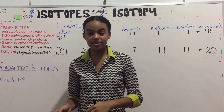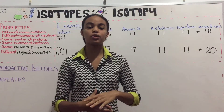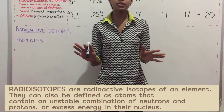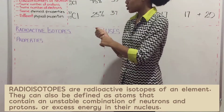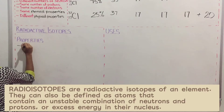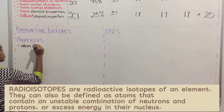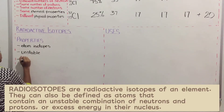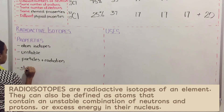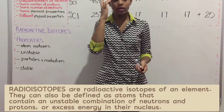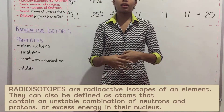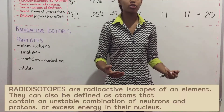Now we're going to look at radioactive isotopes, or radioisotopes, and give some uses of them. Properties of radioactive isotopes include the fact that they are atoms — or rather, the nuclei of these isotopes — that are unstable. They release particles and radiation to become stable.